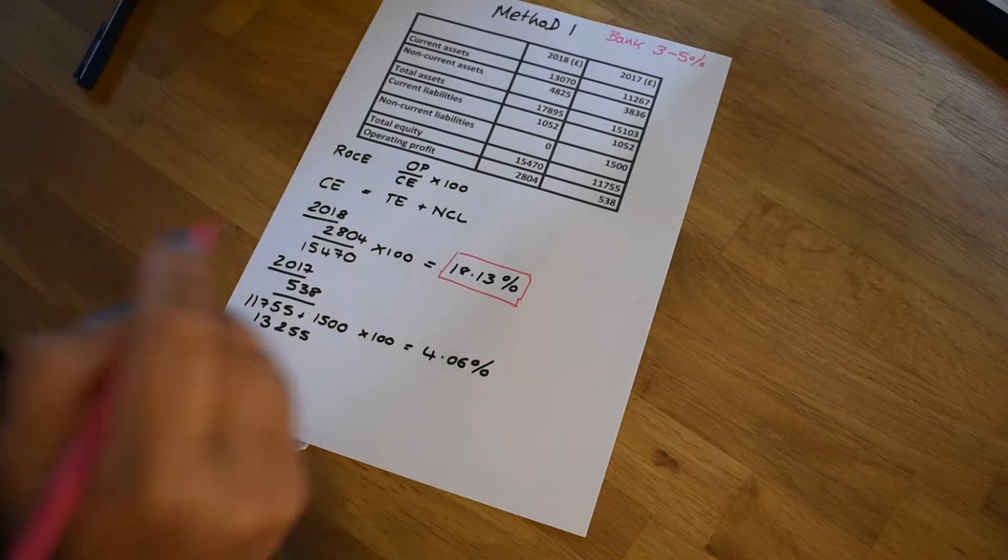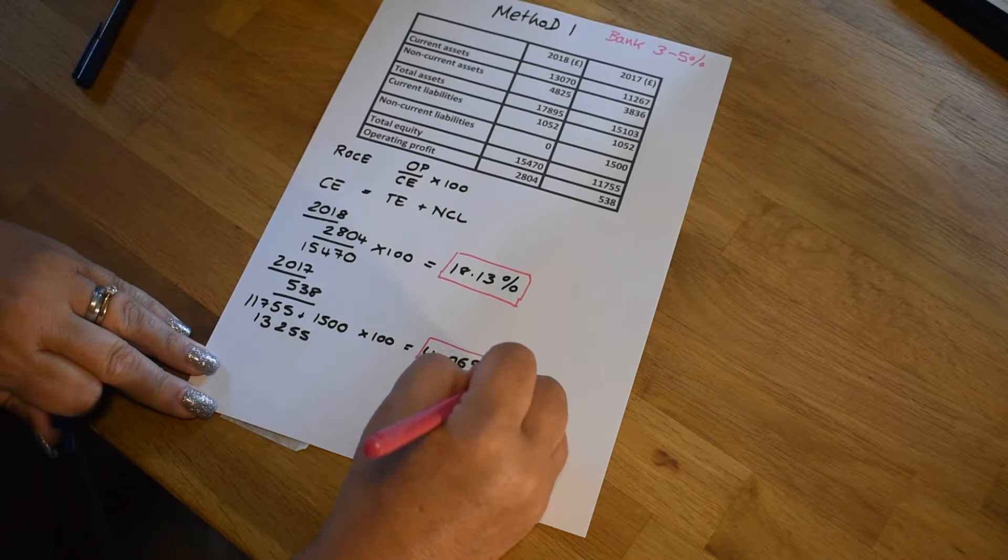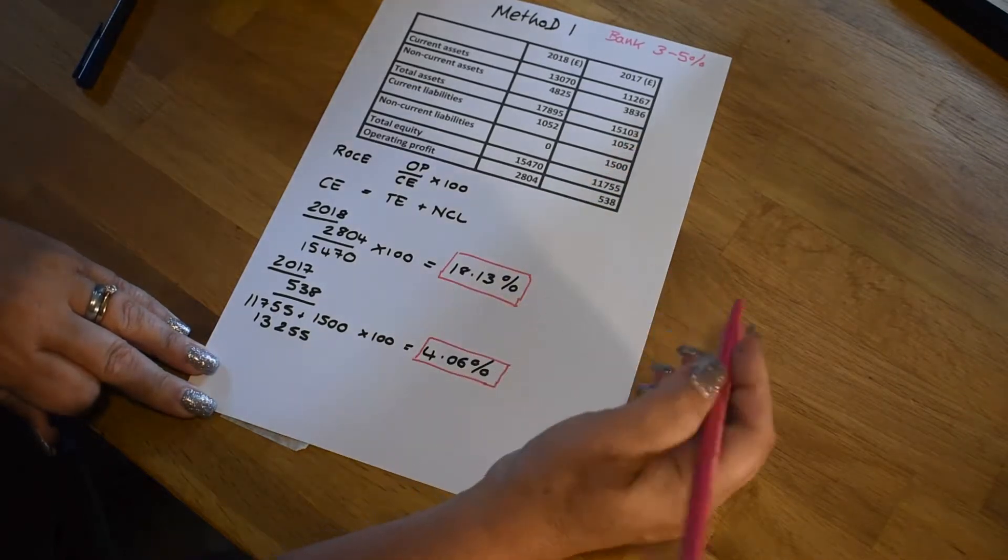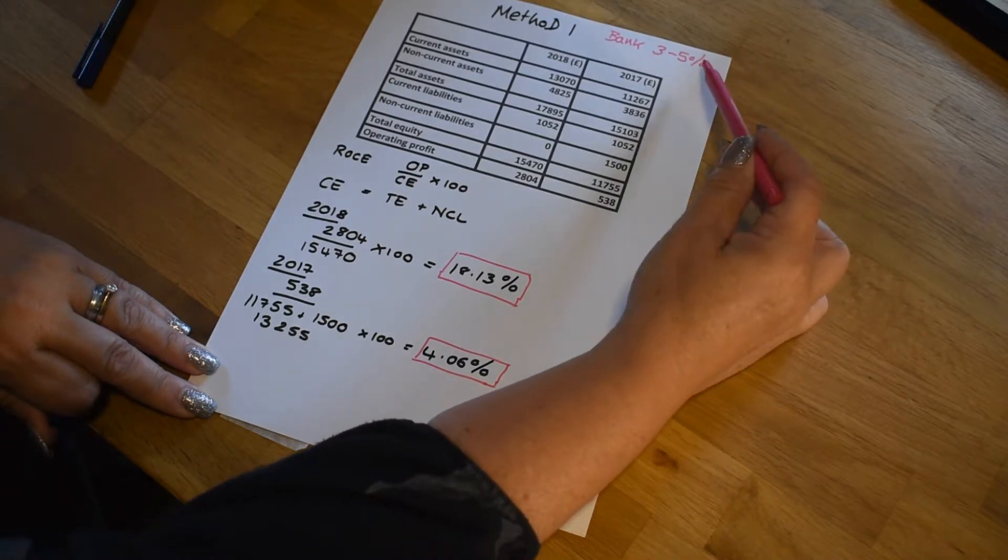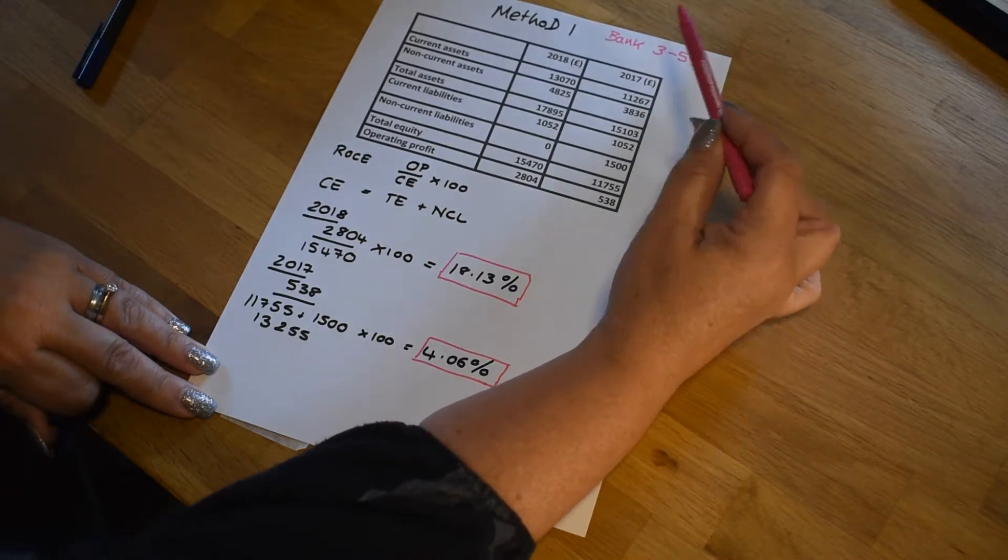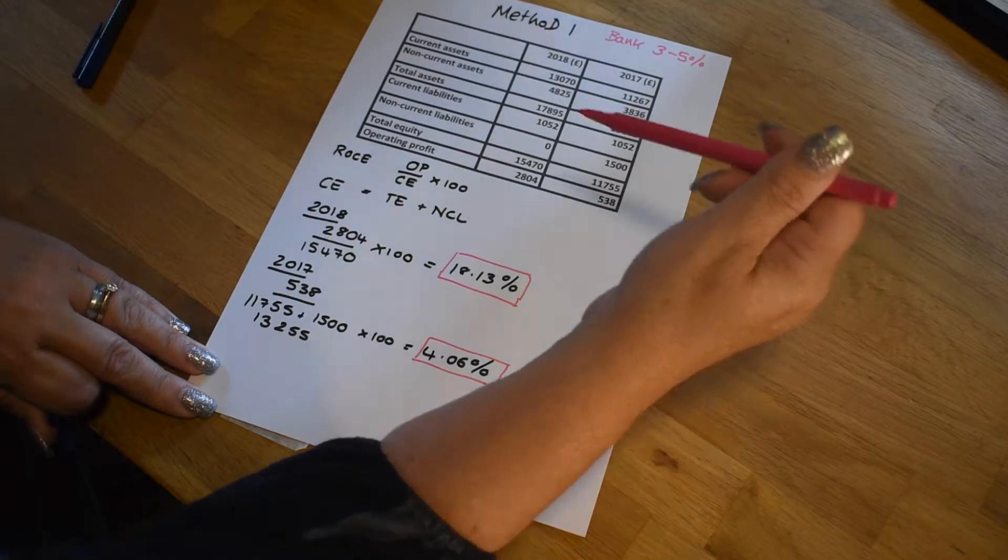So let's take that result from 2017. So we've got some money to invest and we can either put it into a bank account 3 to 5%, which is nice and safe. The money's guaranteed and it's not going to go anywhere. Or we can invest it in this business.